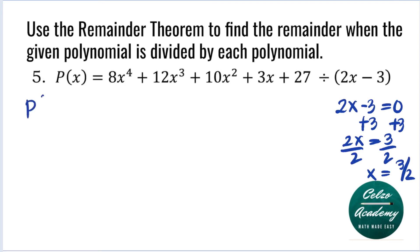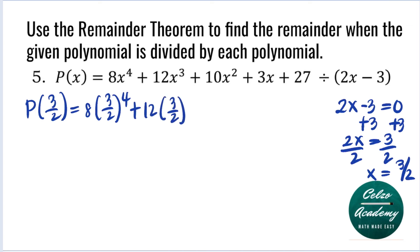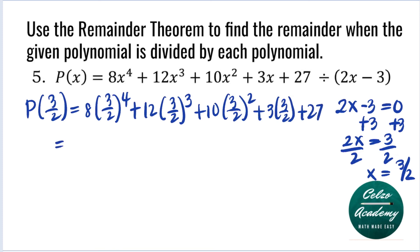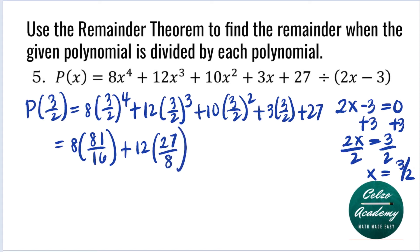This means we need to evaluate P of 3 over 2. Substituting 3 over 2 into X, we have: 8 times (3 over 2) to the fourth, plus 12 times (3 over 2) to the third, plus 10 times (3 over 2) squared, plus 3 times (3 over 2), plus 27.